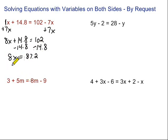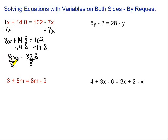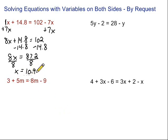102 minus 14.8 is 87.2. Now we're almost there. The x just has this 8 with it. Remember, when there's a number written with a variable that means multiplication, so to get rid of multiplication we do the opposite — division. We divide by 8 on both sides. The 8's cancel and we're left with just x. 87.2 divided by 8 gives us 10.9. If you want to check it, you can take that 10.9, put it back into the original equation, and both sides should turn out to be equal.